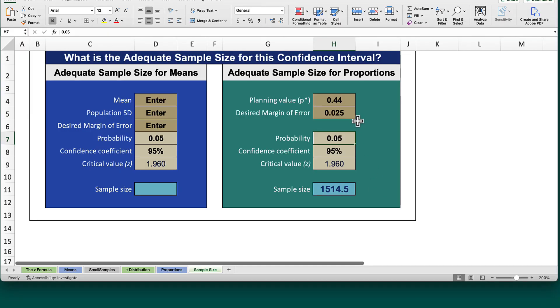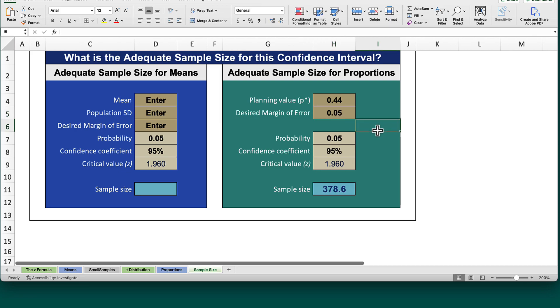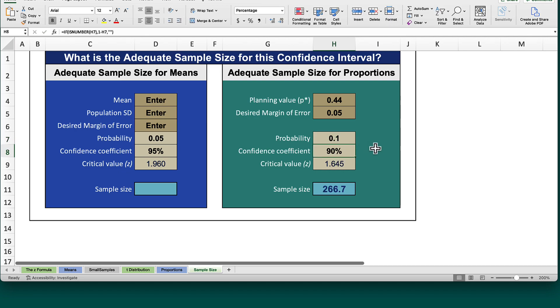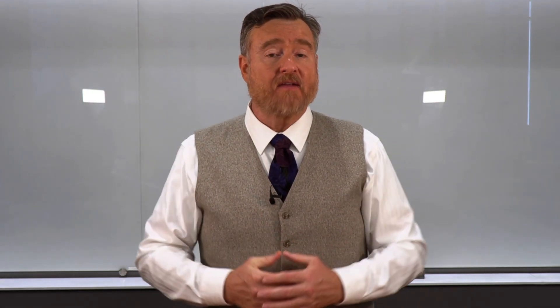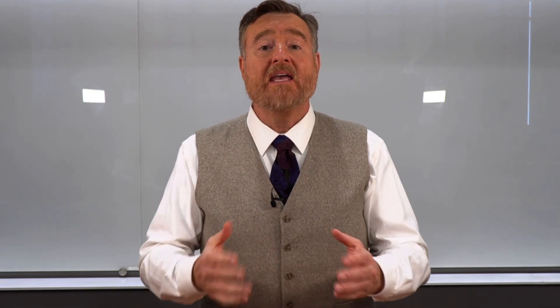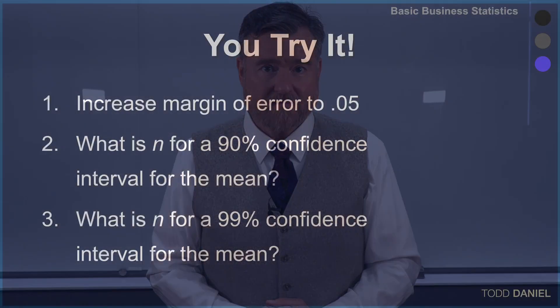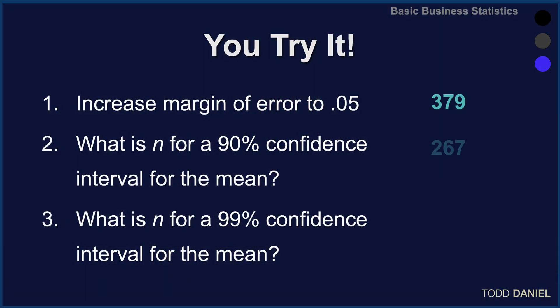Now you try it by changing the parameters. Increase the margin of error to .05. What is the needed sample size for a 90% confidence interval around this proportion? What is the needed sample size for a 99% confidence interval around this proportion? Once you have worked out these answers on your own, here are the correct answers. Take care. Thank you.